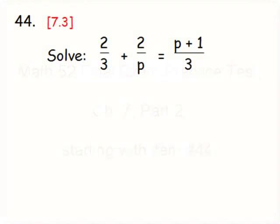All right, number 44 comes to us from section 7.3, where we're working with fractional equations or rational equations. In this case, I'm going to rewrite what we have here. It's 2/3 plus 2 over p equals p plus 1 over 3.